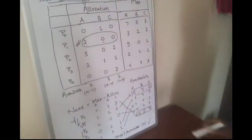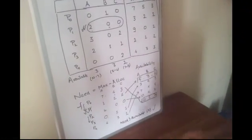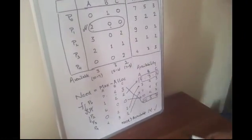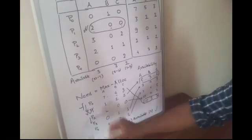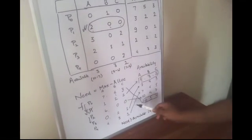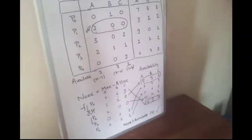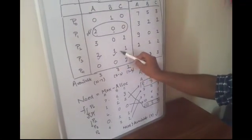Now we move to P2. Same process happens. Its need is 6, 0, 0, which is more than availability. We can't take that. Now we move to P3. It's 0, 1, 1, which is less than availability. We can take that for sure. After getting executed, it releases its own resources 2, 1, 1, which gets added. That's 7, 4, 3. So P3 gets executed.